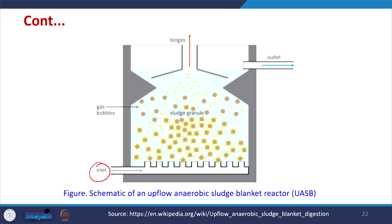In the UASB reactor, the inlet is at the bottom and wastewater flows upward through a sludge blanket containing anaerobic granules. Treatment happens as wastewater passes through the blanket. Gas formation also occurs and biogas — including methane — is taken out from the top. The treated wastewater exits from the side. You can refer to the UASB lecture for further detail on reactor operation.